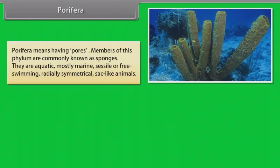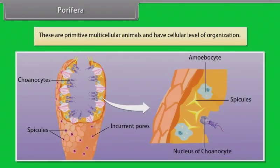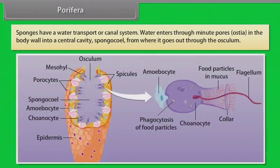Porifera means having pores. Members of this phylum are commonly known as sponges. They are aquatic, mostly marine, sessile or free swimming, and radially symmetrical sack-like animals. They are mostly asymmetrical and generally marine. They look plant-like and are fixed at one place. These are primitive multicellular animals with cellular level of organization.